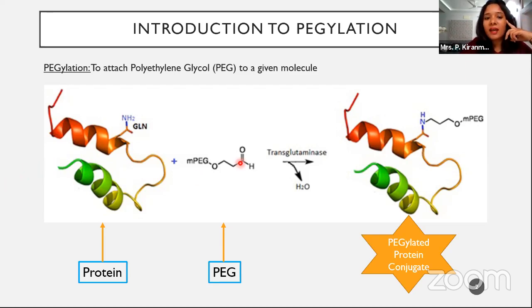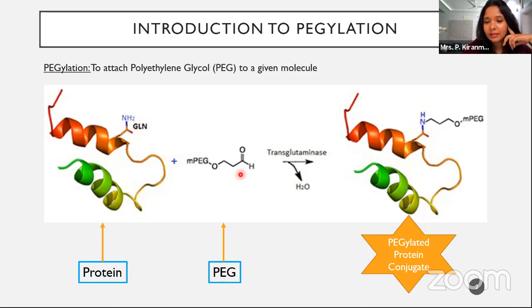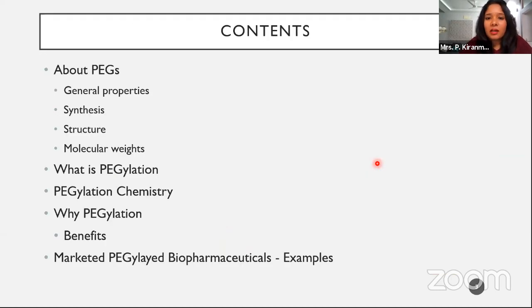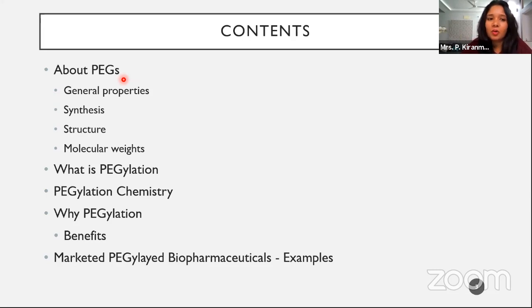For today's concept, there are two things to discuss: the PEG molecule — its properties and how it is manufactured — and how conjugation will be done. We'll see the contents in order: first, about polyethylene glycol; why it is specifically used for conjugation; the general synthesis route for PEG; its structure and molecular weights. PEG is manufactured by a polymerization reaction, so the end PEG molecule will have different molecular weights. We'll then touch on PEGylation chemistry and why we use PEGylation — what advantages it brings.